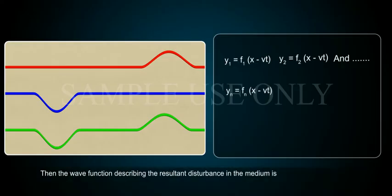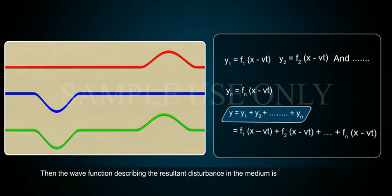Then, the wave function describing the resultant disturbance in the medium is Y = Y1 + Y2 + ... + Yn = f1(x - vt) + f2(x - vt) + ... + fn(x - vt).